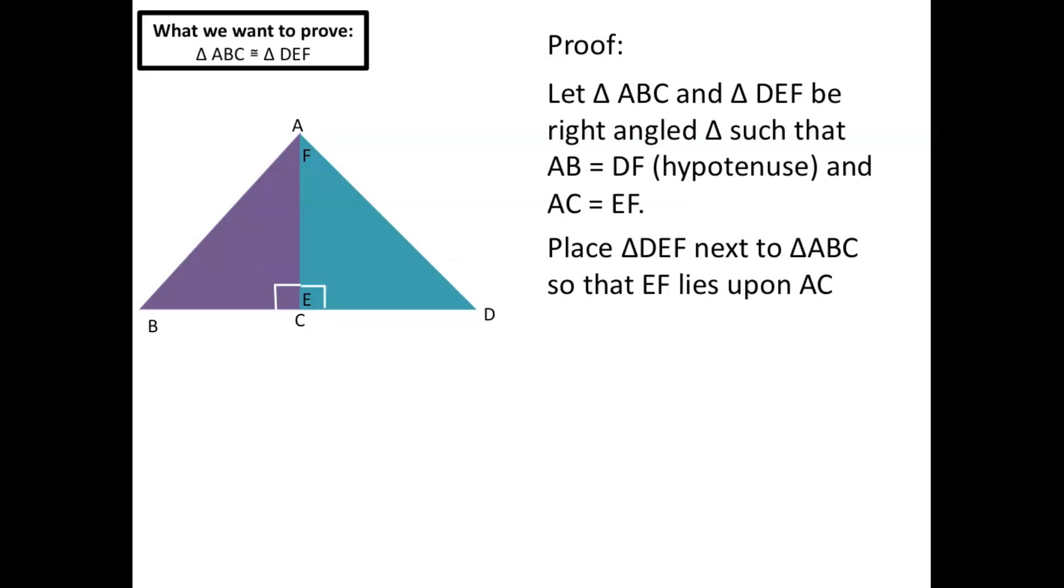Plus we know from before that the hypotenuses of both the right angle triangles are equal, so that means that triangle ABD, the new triangle that we created, has to be isosceles since AB and DF or AD are equal.